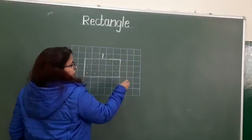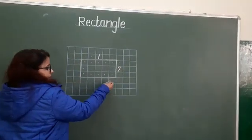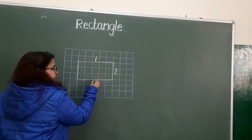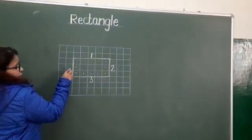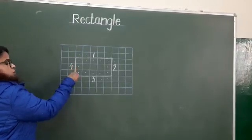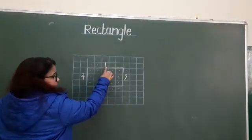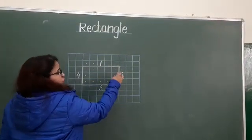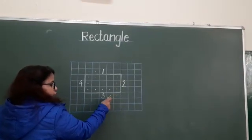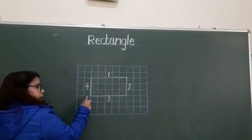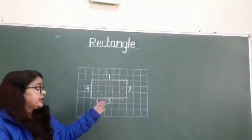This side, leave one block, and here is side number two. Now long side, leave two blocks, one, two, and here is side number three. Now leave one block and here is side four.